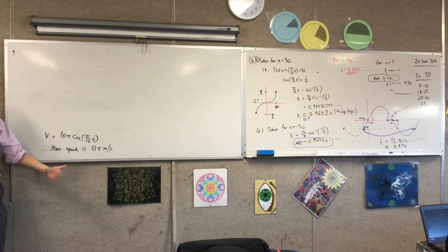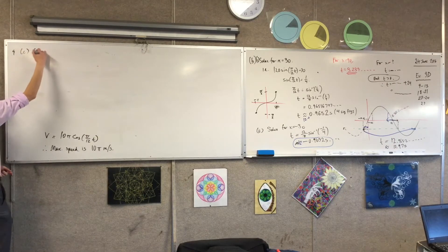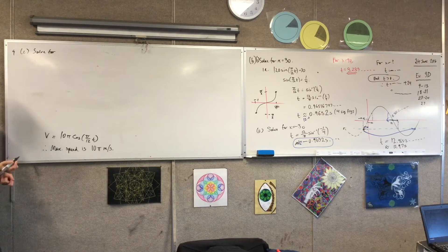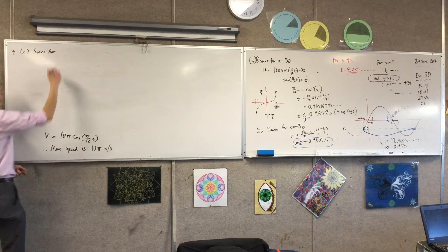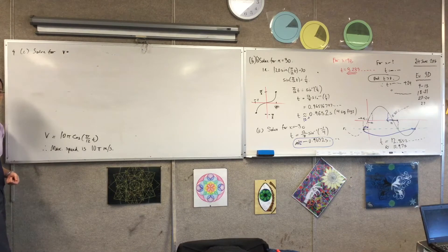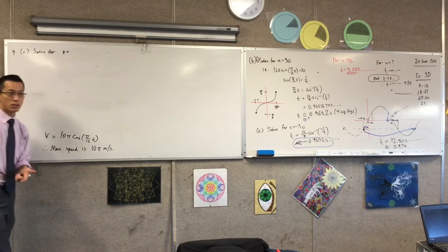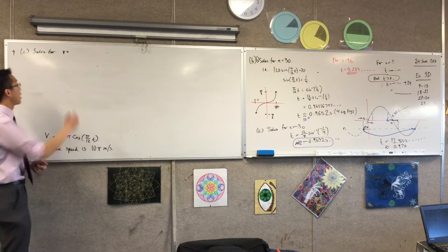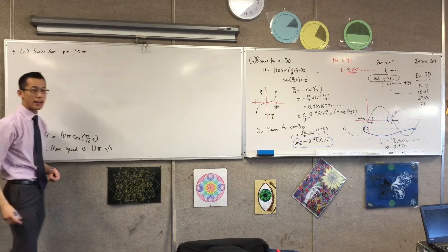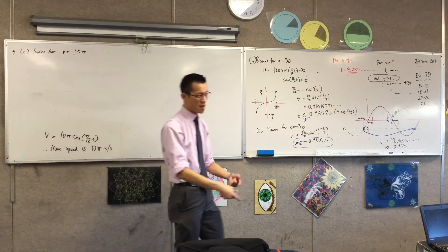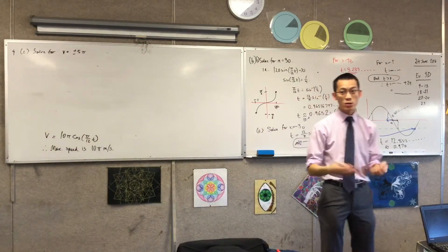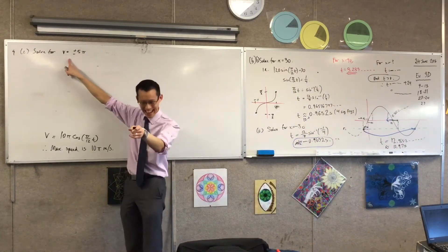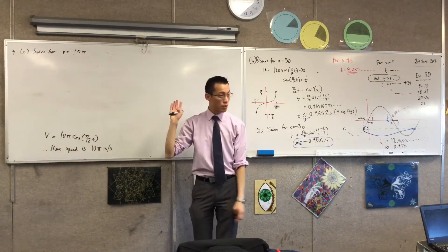Now I've already calculated maximum speed, right? So for part C, I'm trying to solve for v equals, yeah, v equals what? You told me not to worry about sign, right? So in fact, it's plus or minus 5π. Plus or minus 5π. Because if I hit 5π, obviously that's half, but if I hit negative 5π, that is also half, because I don't care about direction.